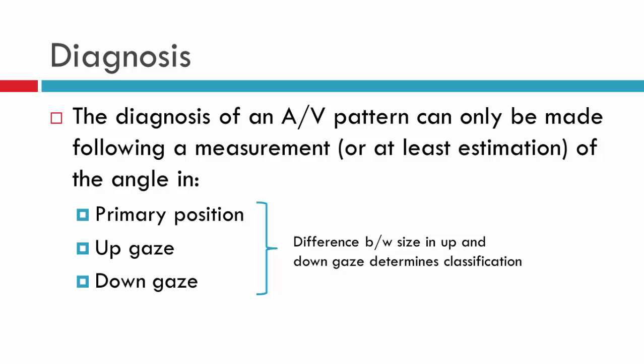In order to make a diagnosis of an alphabet pattern — whether A, V, X, or diamond — we need an assessment in primary position, up gaze, and down gaze. We compare up and down gaze in terms of the deviation, and also take into consideration primary position to assist in further subclassification of the patient as to whether it's an A or V eso or exo, and also whether it is more of a diamond, Y, X, or lambda pattern rather than an AV.